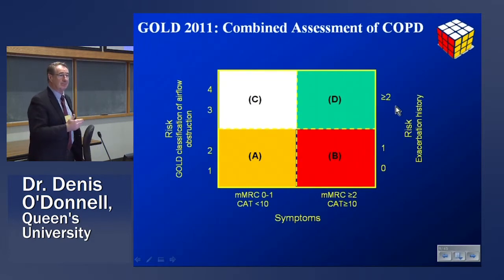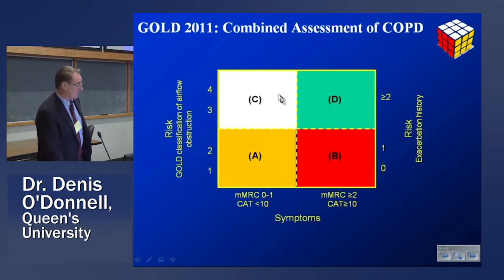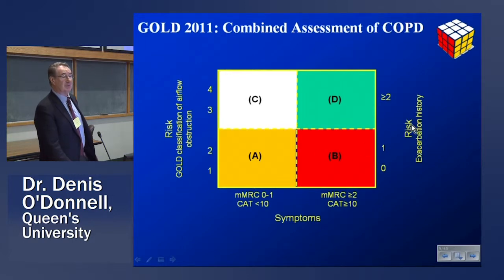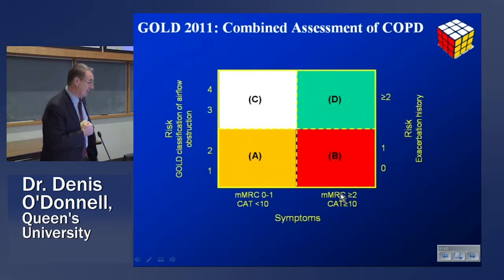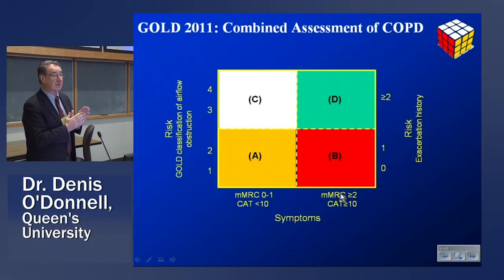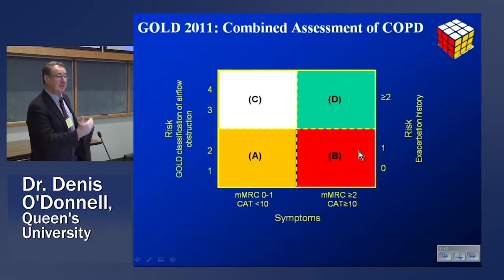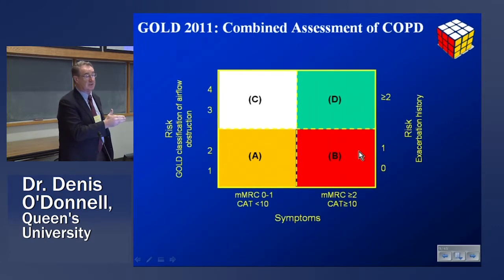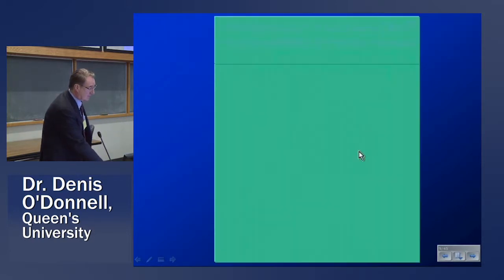In the modern era, where do the blue bloaters and pink puffers fit in? They don't, actually. They're probably dispersed throughout all these complicated categories. But we've been interested in the so-called GOLD 1Bs — those who are symptomatic. Their MRC is up, their CAT score is greater than 10. They have worse prognosis, poorer quality of life, and are more likely to get cardiovascular problems. So we've been focusing on these to see if we can identify specific physiological abnormalities, even at this so-called milder stage of the disease.